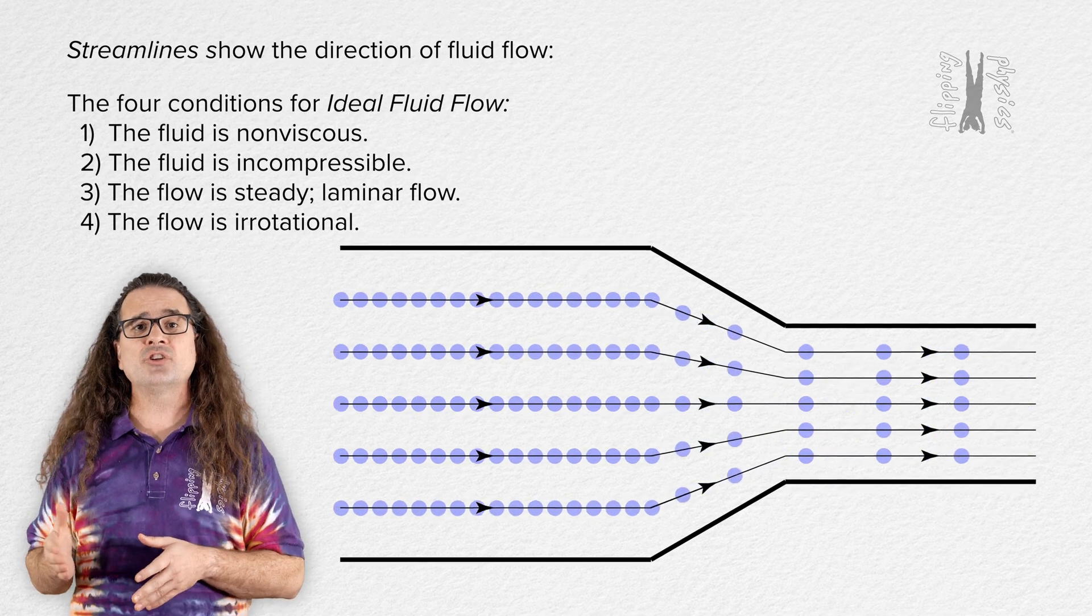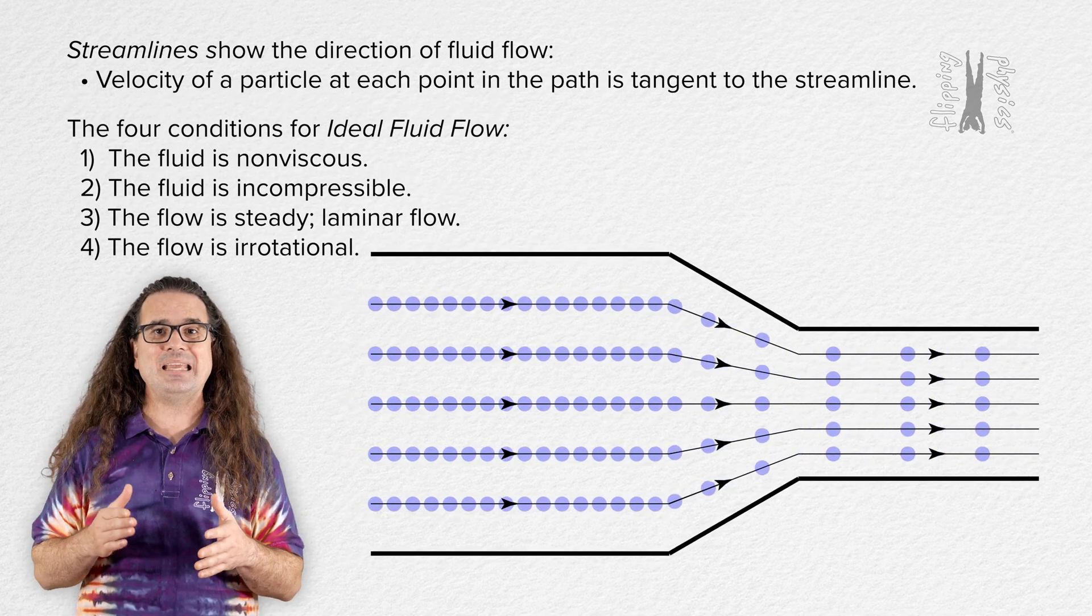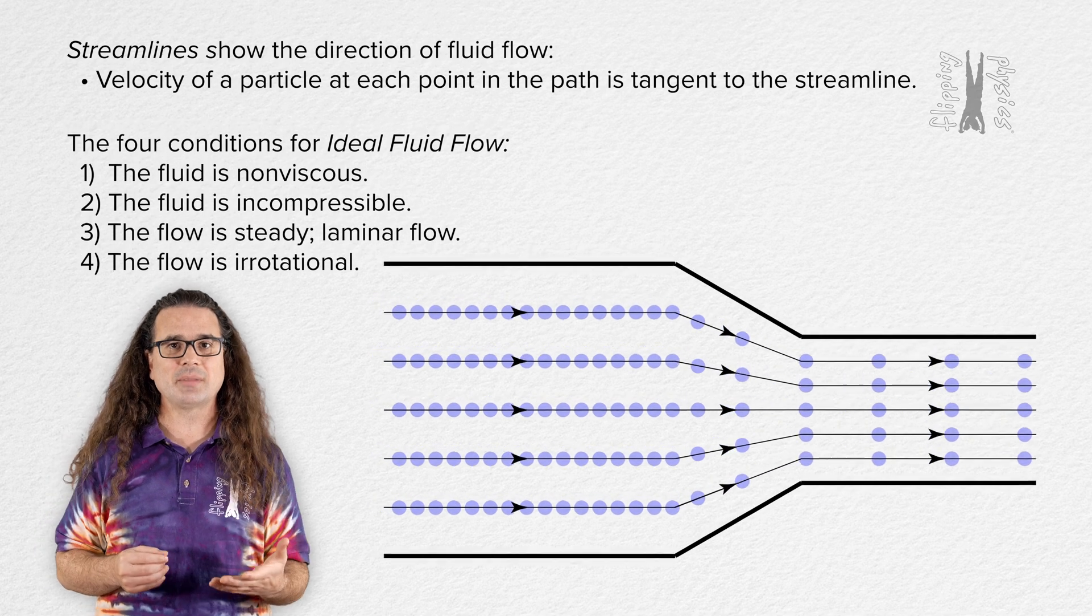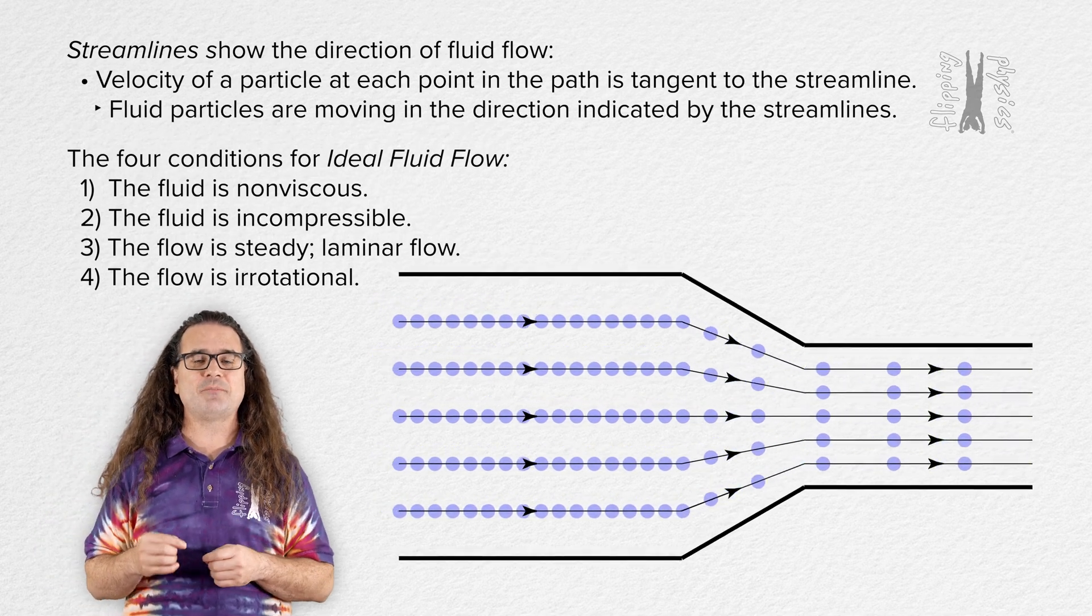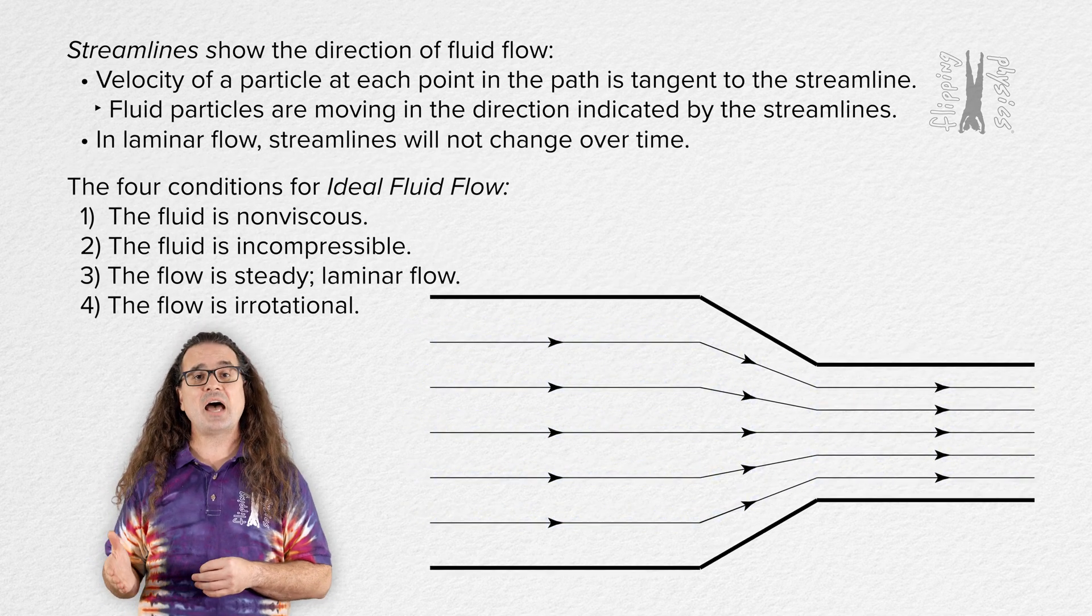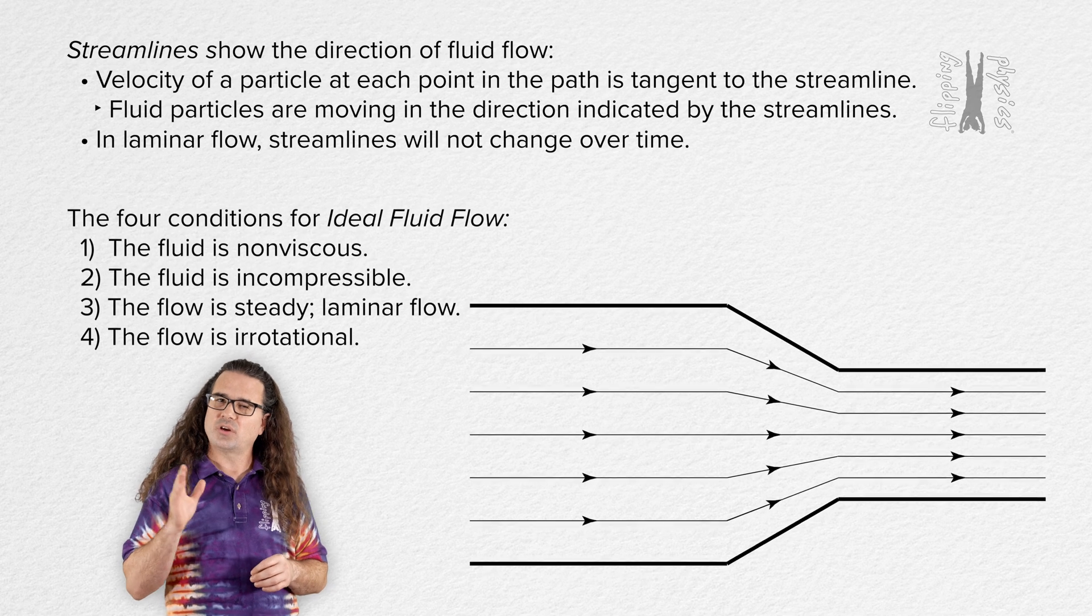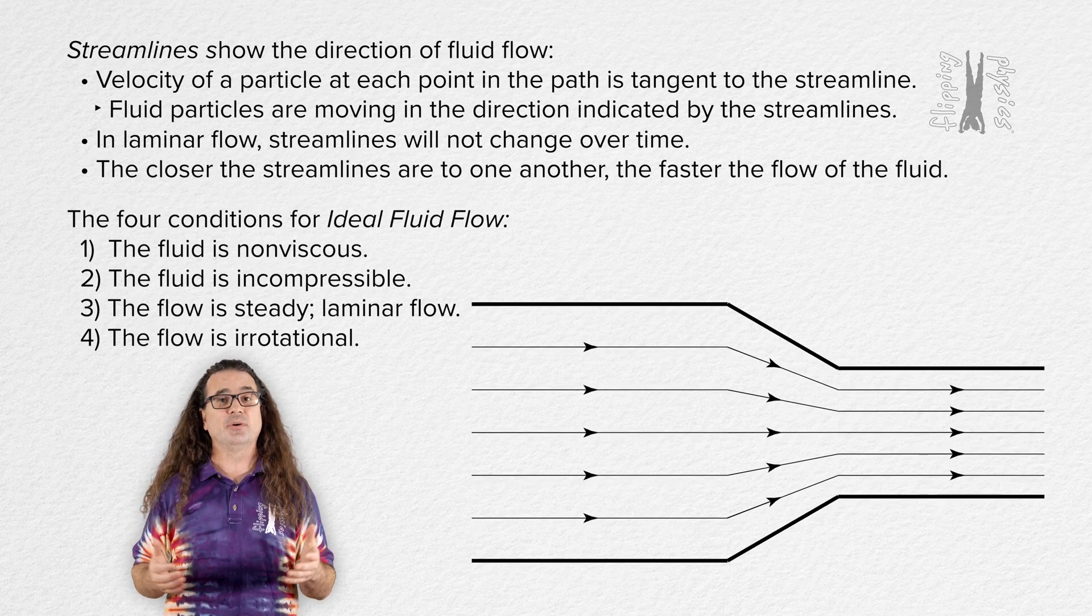Streamlines show the direction of the fluid flow. In other words, the velocity of a particle at each point in the path is tangent to the streamline. The fluid particles are moving in the direction indicated by the streamlines. In laminar flow, the streamlines will not change over time. And realize that the closer the streamlines are to one another, the faster the flow of the fluid.